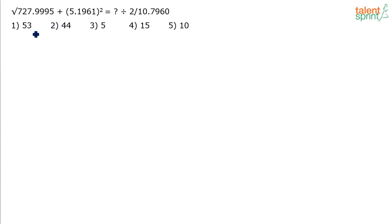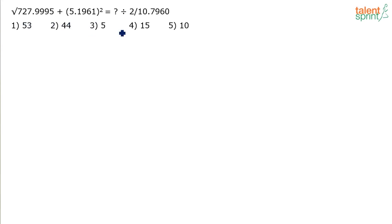If the options were very close, like 53, 52, 51, 49, it becomes challenging because even a small error in approximation can lead to a wrong answer. But since the options are far away from each other, we can approximate to a good extent.